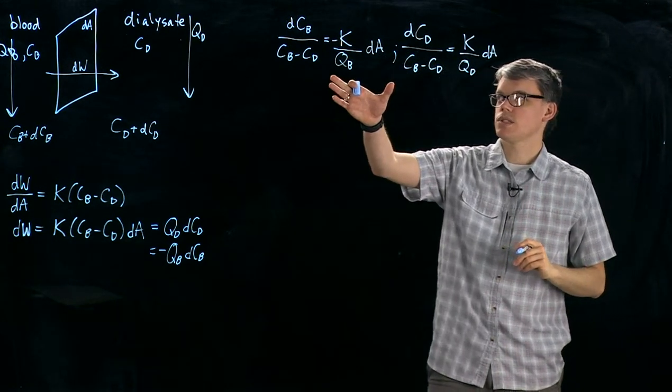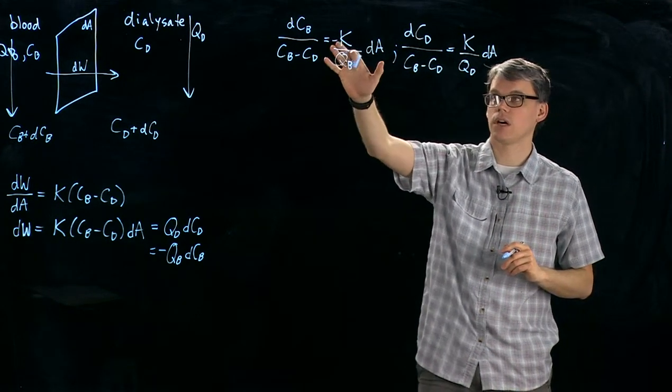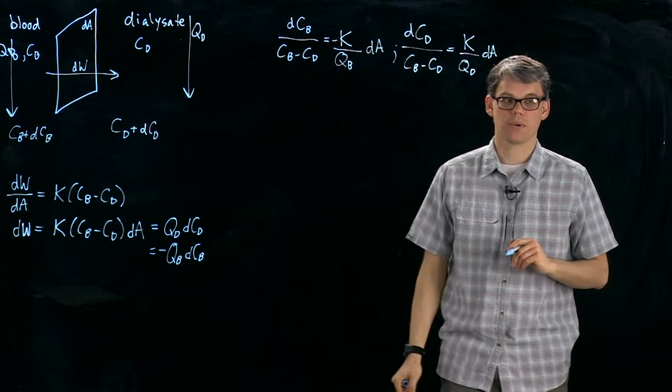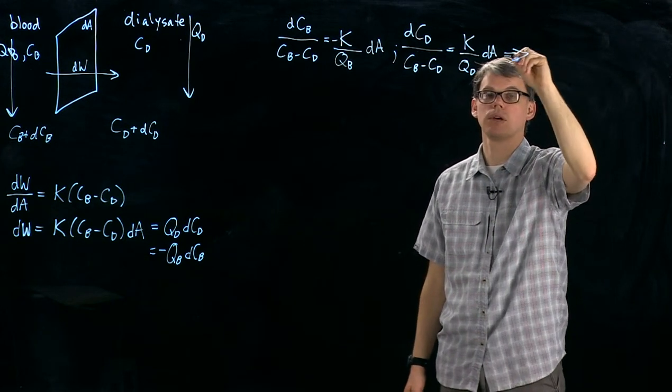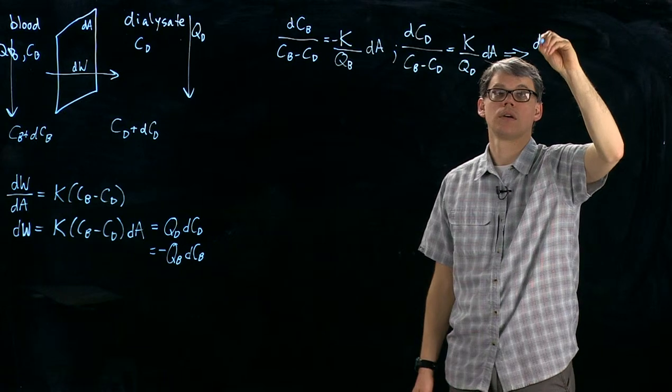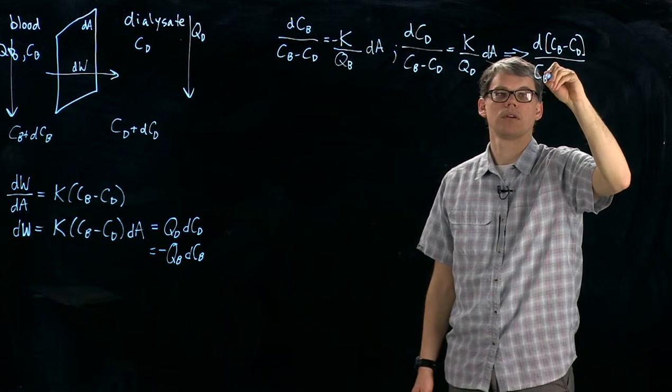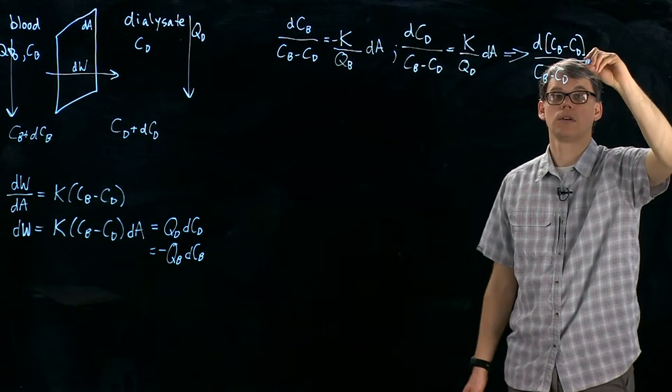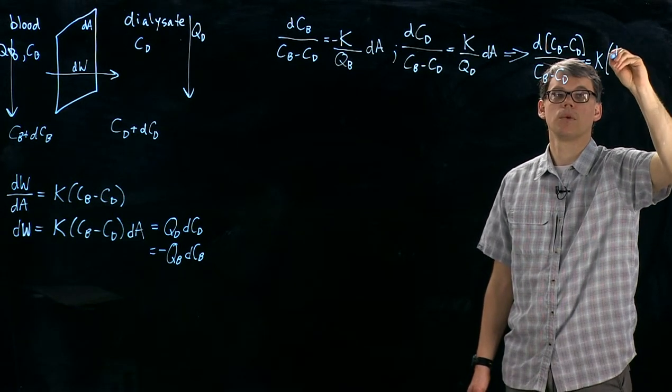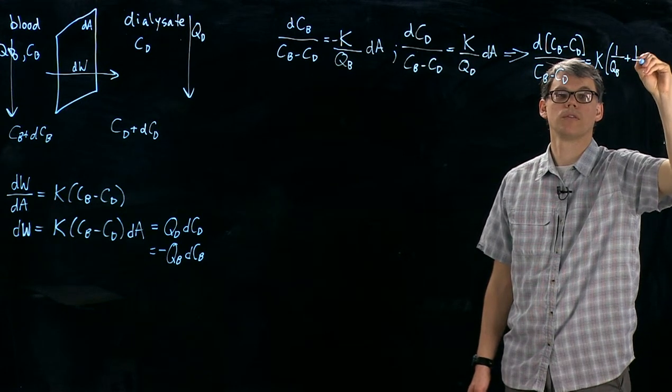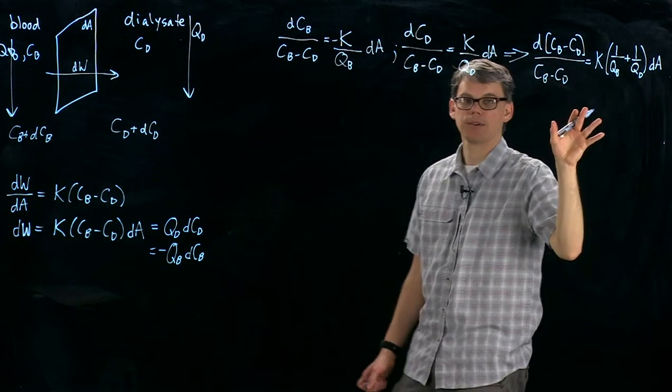Let's combine these two equations, and then we're going to do an integration. So we're going to integrate over the entire area to figure out the entire mass transfer rate. So if we do that, we end up with combining the two equations, something that looks like this. And then we have K and then 1/QB and 1/QD times dA.